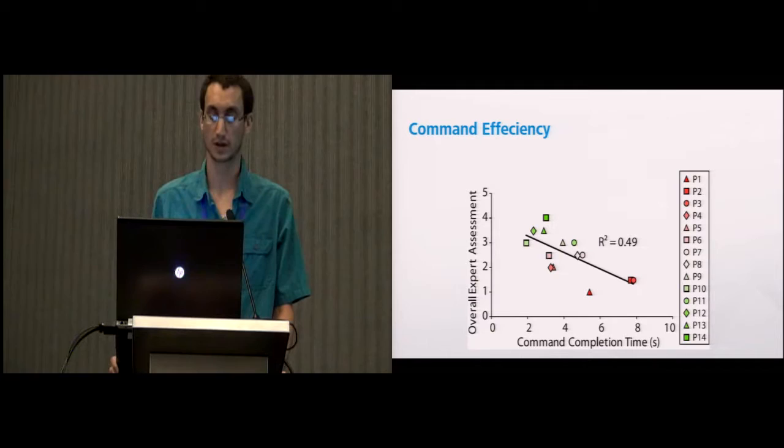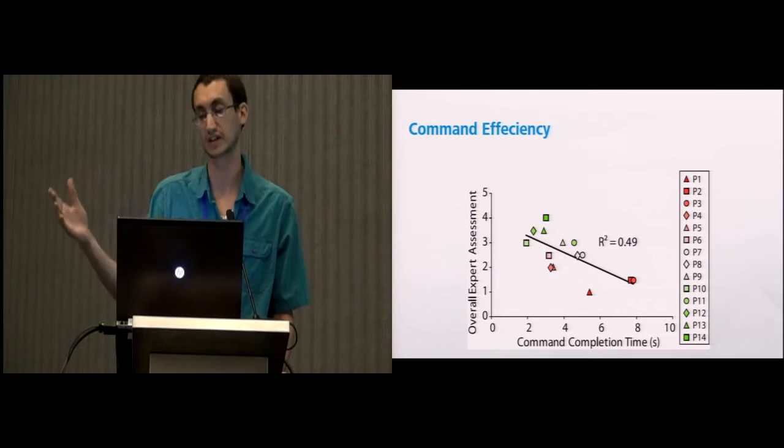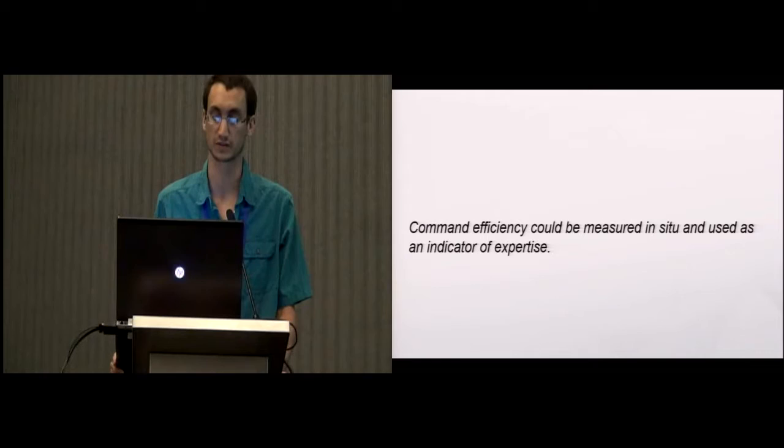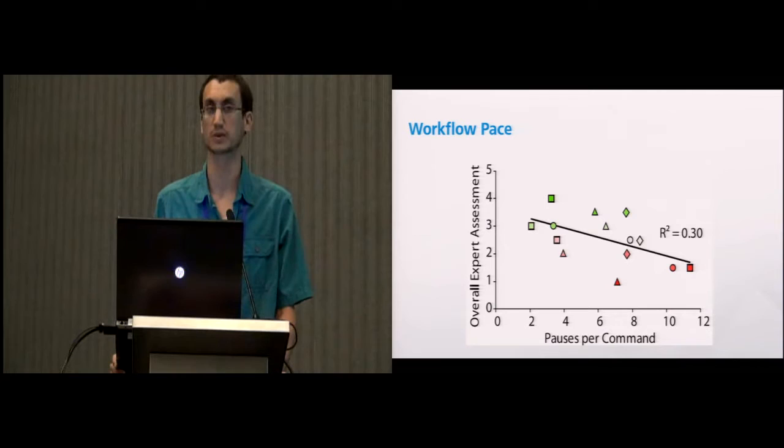When we go back to command efficiency, how quickly they're completing commands from the in-situ data, we do get a correlation to expertise. This is a really interesting and important result. Because once again we had no model of what sort of tasks people were doing, how complex the work was, but just looking at how long it took them to trim something or extend a line was an indicator of expertise level. Command efficiency could be measured in-situ and used as an indicator of expertise.